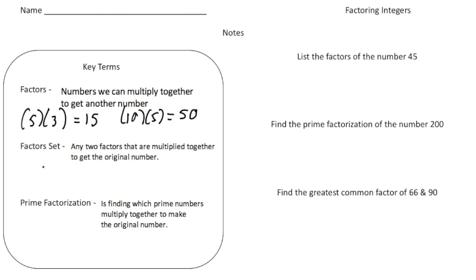So if I have the number 8 and I want to list the factor sets, I could say 1 and 8 — so 1 times 8 is one factor set — as well as 2 times 4, which is another factor set.